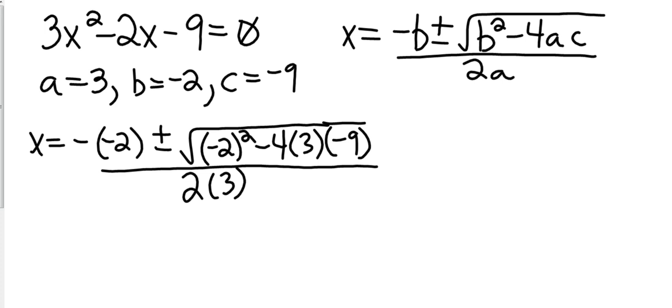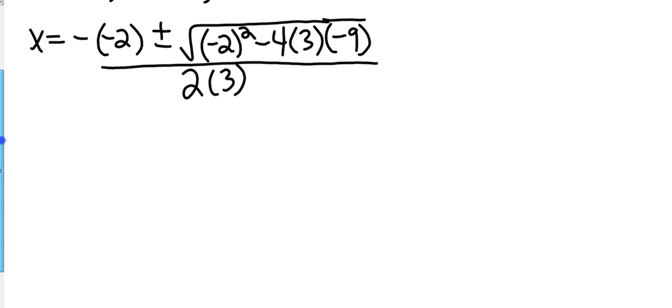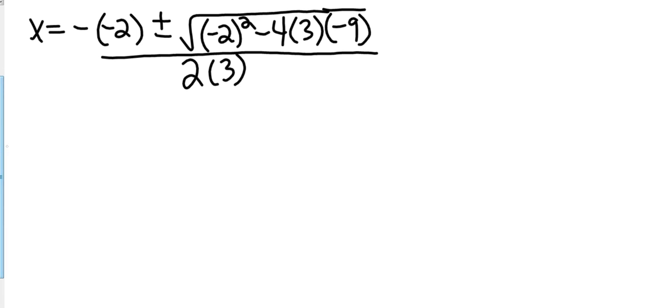So I'm going to start plugging in. I've got x equals negative b plus or minus square root of b squared minus 4 times a times c, all over 2 times 3. On this section, it will be good to have a calculator. It'll save you a lot of time. So let's start cleaning it up. We have a negative, a negative 2, that's going to be 2 plus or minus square root. Negative 2 squared is 4. Negative 4 times 3 is negative 12.